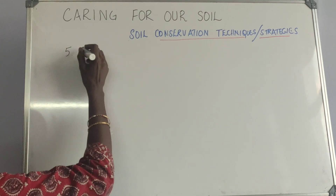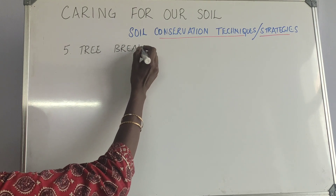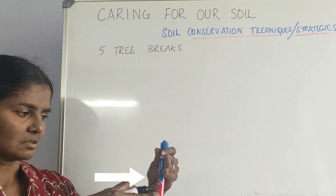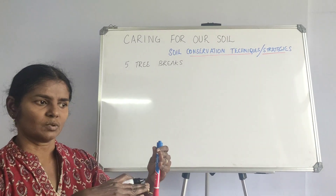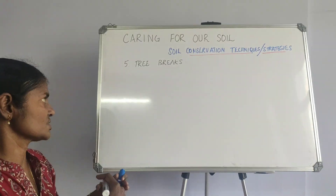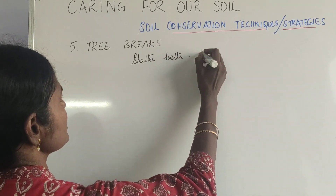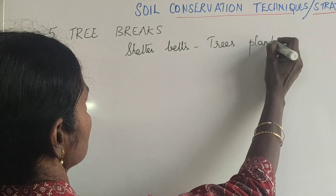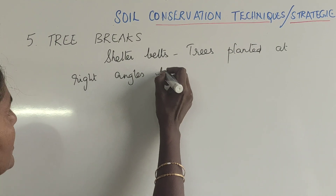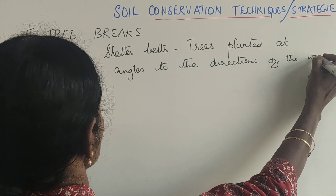The fifth method is tree breaks. When the direction of the wind is going one way, trees are planted at right angles to the direction of the wind. This prevents or reduces the velocity of the wind, thereby reducing soil erosion. These tree breaks are also called shelter belts.